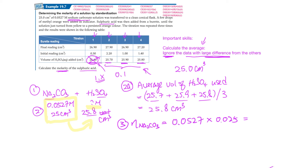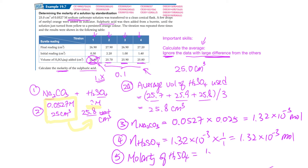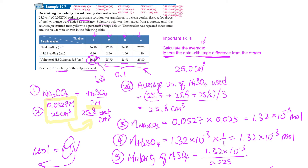Since the mole ratio is 1:1, moles of H₂SO₄ = 1.32 × 10⁻³ mol as well. Finally, molarity of H₂SO₄ = moles ÷ volume = 1.32 × 10⁻³ ÷ 0.0258 = 0.0512 M. Remember to give three significant figures. So the answer is 0.0512 M. That's all for questions like this.